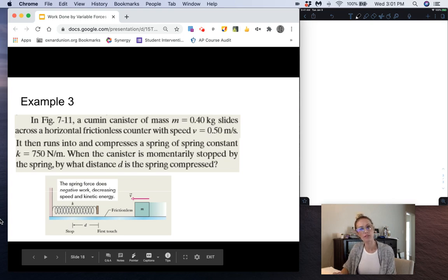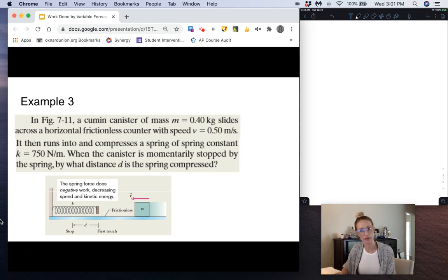Here we have an example of the work done by a spring force, which is also a variable force. We have in this figure a cumin canister of mass 0.4 kilograms slides across a horizontal frictionless counter with a speed v of 0.5 meters per second. It then runs into and compresses a spring of spring constant k equal to 750 newtons per meter.